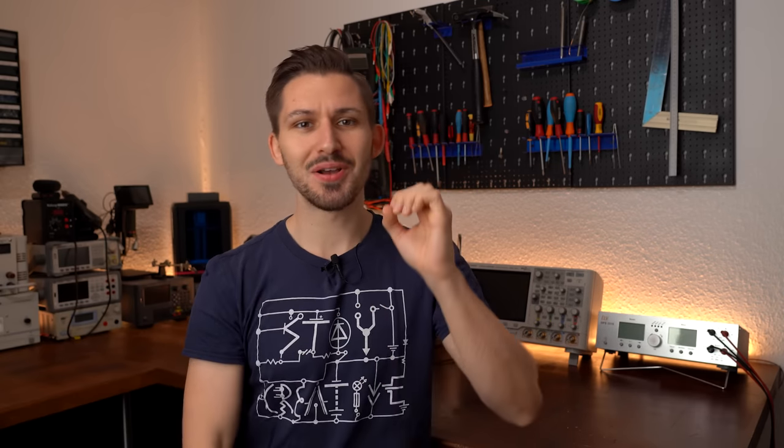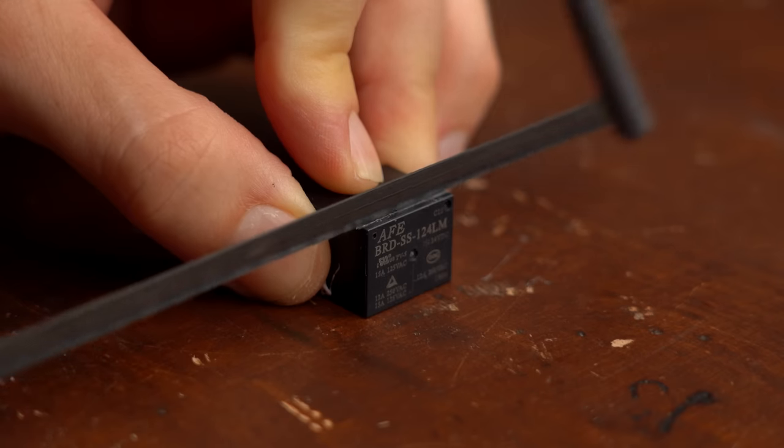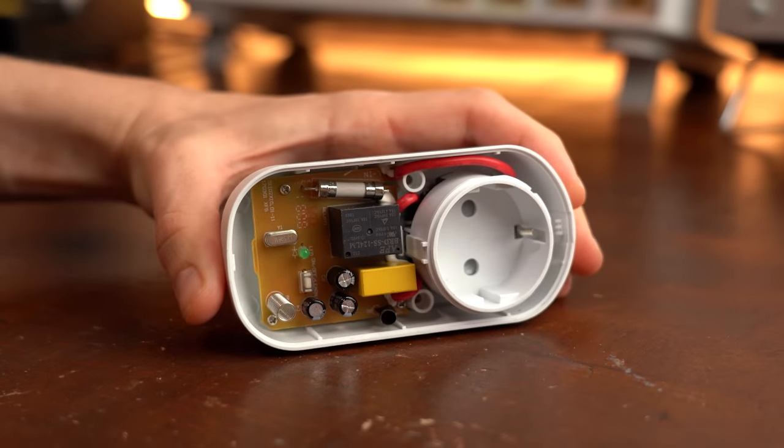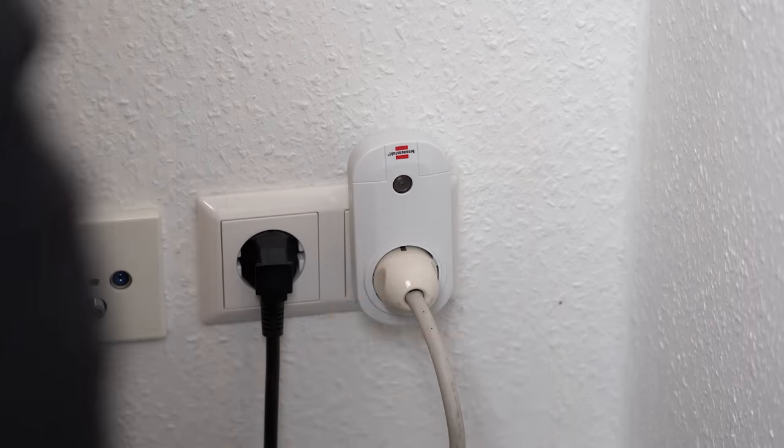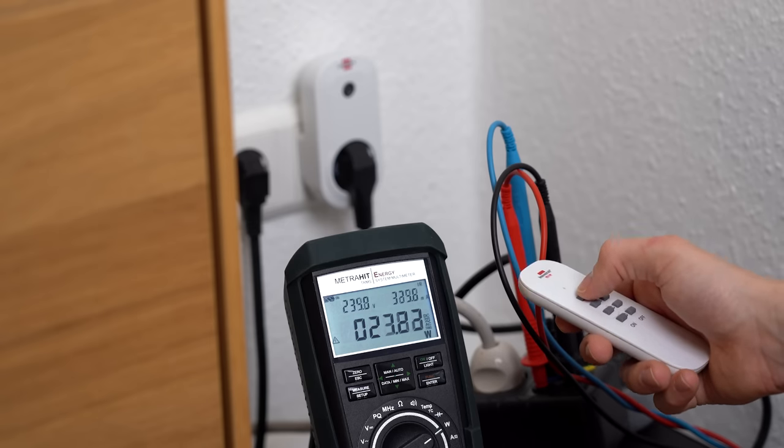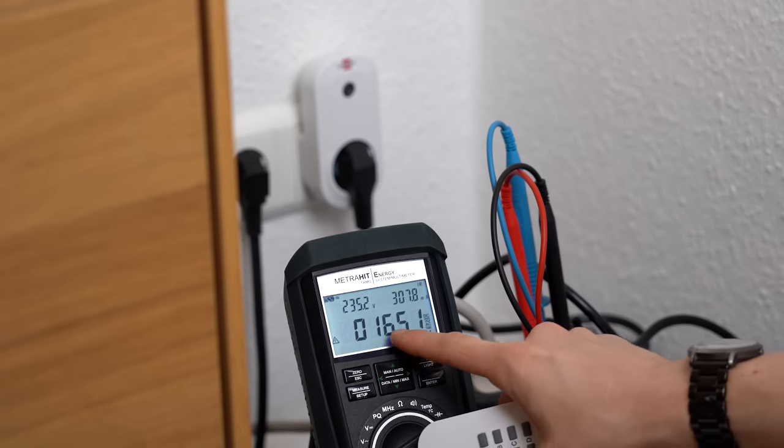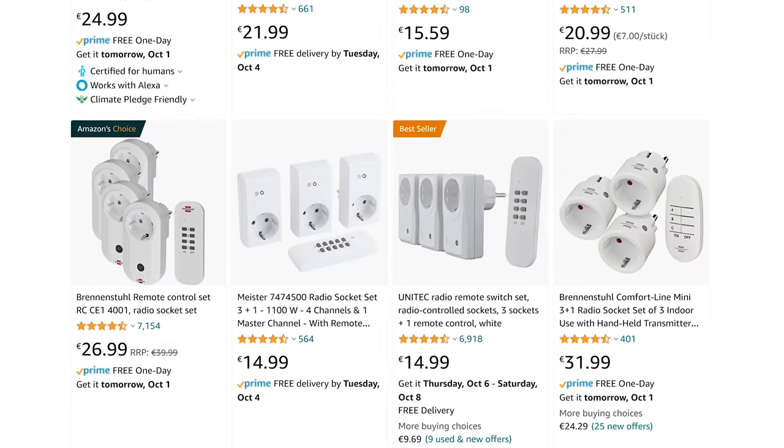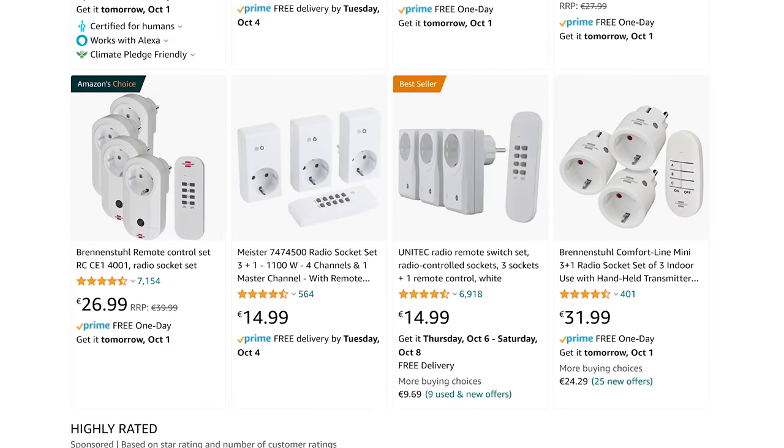And I hate it because the relay which I've been using as a test subject here is actually from a wireless socket that I've been using for a while. Such sockets are great for properly disconnecting your appliances from the grid and thus getting rid of standby power. But so far in my life I tried three different wireless socket sets which all eventually failed due to this relay sticking.